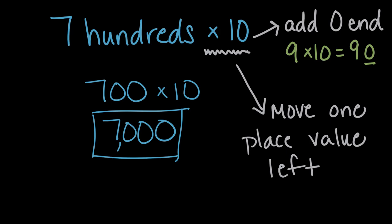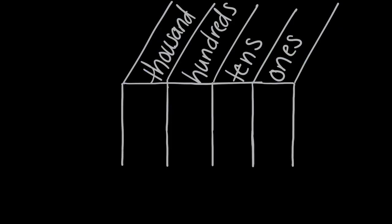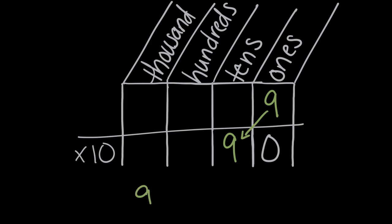So let's look at that one on a place value chart. Here we have a place value chart. To use that earlier example, when we had nine ones, and we multiplied it by 10, our nine moved one place value to the left. It moved up to the tens. Now we had nine tens. And we filled in a zero here, because there were no ones left, there were zero ones left. And so we saw that nine times 10 was equal to 90.